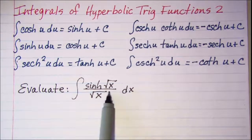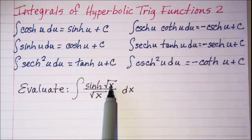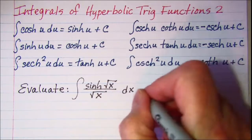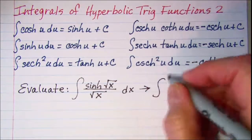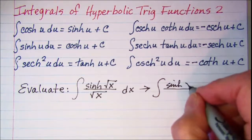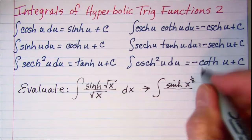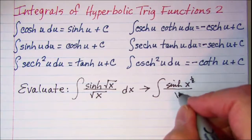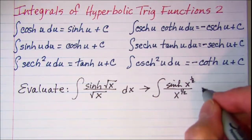Now I'm going to rewrite this with an exponent. So we're actually doing the integral of hyperbolic sine x to the one-half divided by x to the one-half dx.